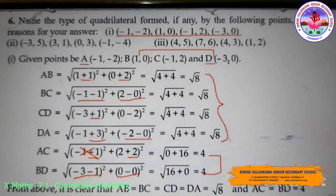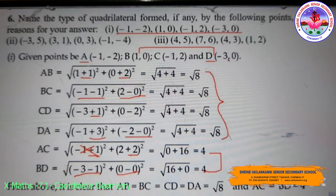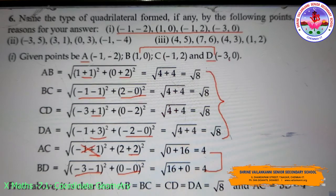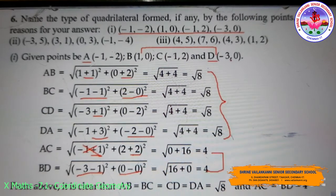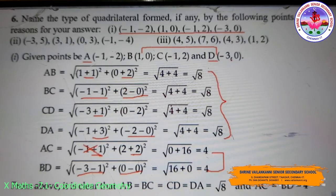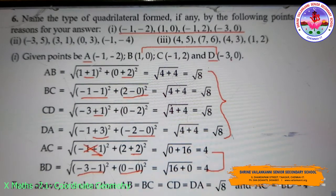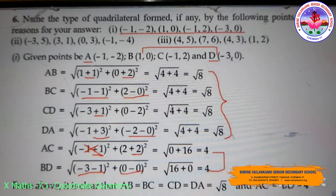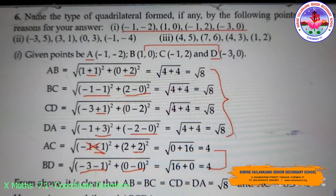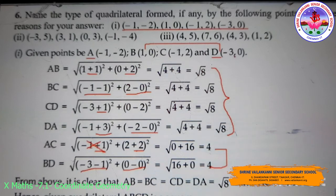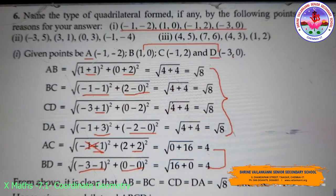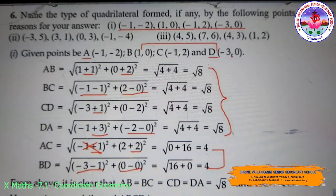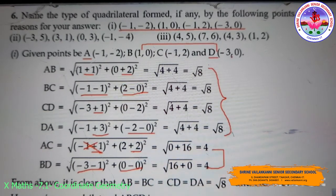Now we need to find out the distance for these given problem subdivisions. Coming to the first subdivision, we have 4 points named A(-1, -2), B(1, 0), C(-1, 2), and D(-3, 0). With these 4 points we are going to frame a quadrilateral. We are going to find the distance of AB, BC, CD, DA as well as the diagonals AC and BD.